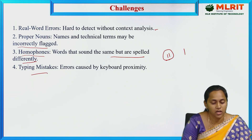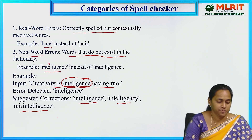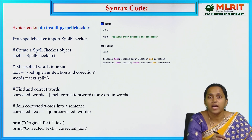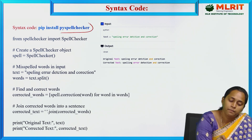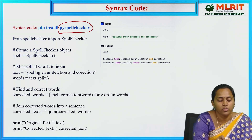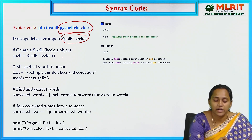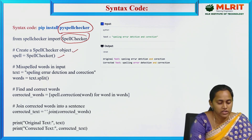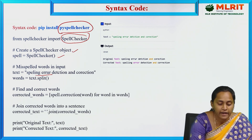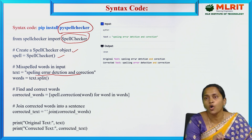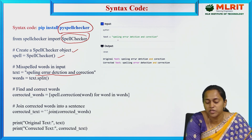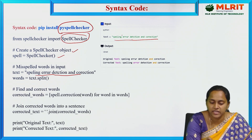Let's see the Python code. First, install the library using 'pip install pyspellchecker'. Then import SpellChecker from the spellchecker module and create a SpellChecker object. To find misspelled words for spelling error detection, we split the sentence into tokens. For example, the sentence 'spelling error detection traction' is first split into individual words.